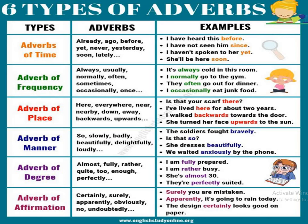The first is adverb of time. Examples include: already, ago, before, yet, never, yesterday, soon, lately. Sentence examples: 'I have heard this before' — 'before' denotes time. 'I have not seen him since' — 'since' also denotes time. 'I haven't spoken to her yet' — 'yet' denotes time, meaning up until now. 'She'll be here soon' — 'soon' denotes time. These are all adverbs of time.